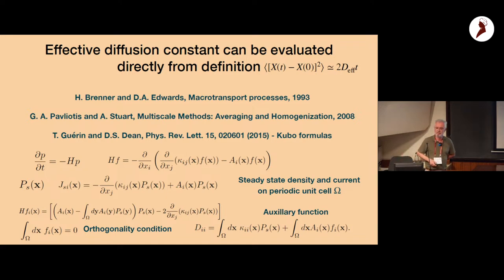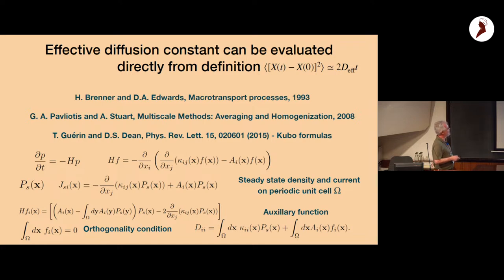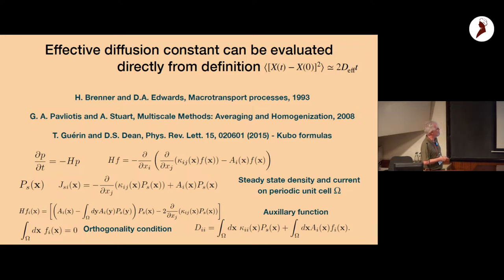The effective diffusion constant can be derived from a first passage time argument. However, for random potentials like the Sinai model, first passage time arguments don't work. There are also other more direct formulas. One approach — not well known in the physical literature — comes from Brenner, a fluid dynamicist, whose book on macro transport processes has a very general formalism for calculating effective transport properties.